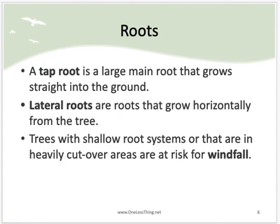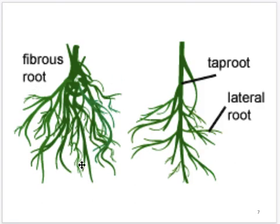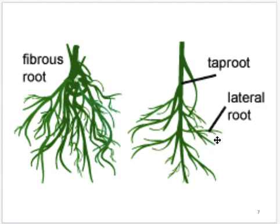Fibrous roots don't have a tap root system. Typically trees are not fibrous-rooted, though there are some kinds. Most trees have a tap root system, which hopefully anchors them better to the ground, and then they have all these lateral roots, which in turn have all the root hairs off of those.